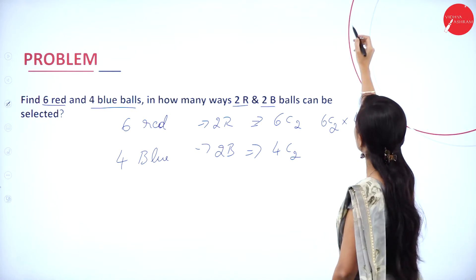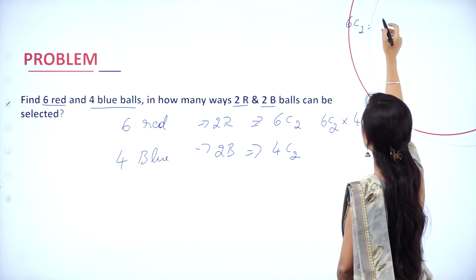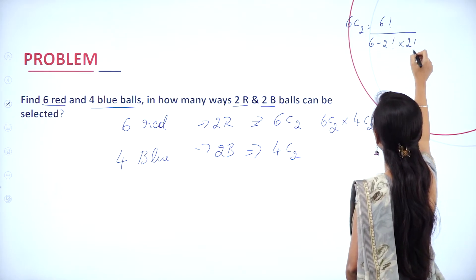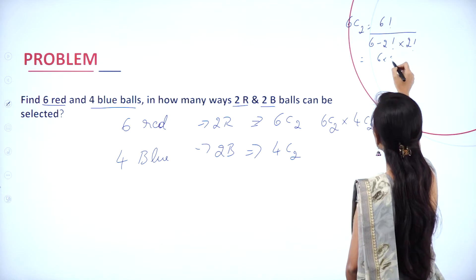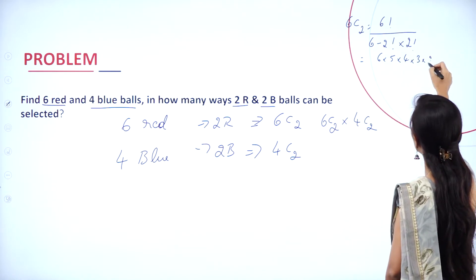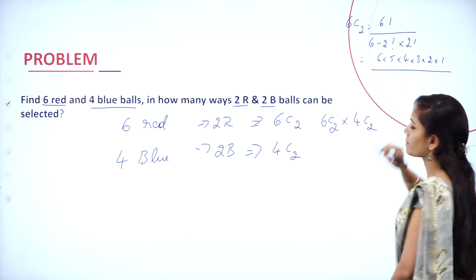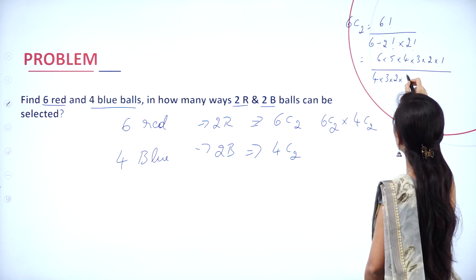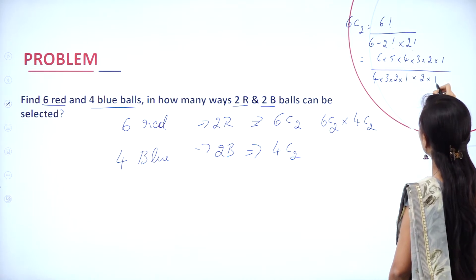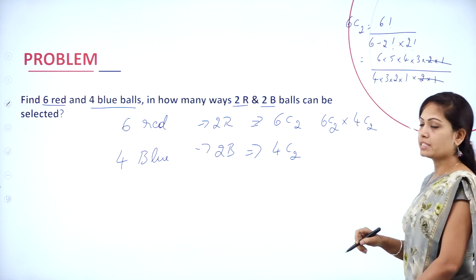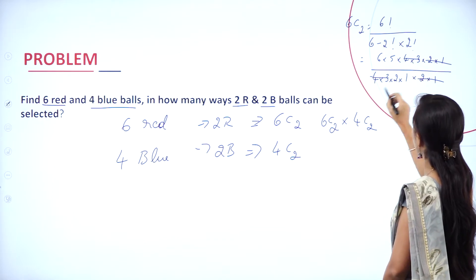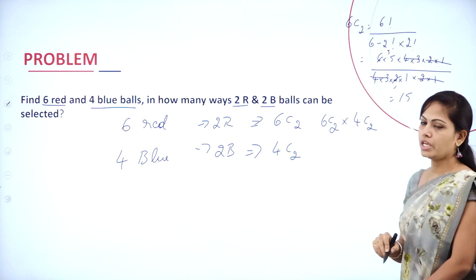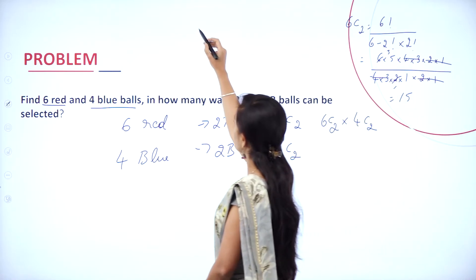Find the value of 6C2: that is 6 factorial divided by (6 minus 2) factorial into 2 factorial. That gives 6×5×4×3×2×1 divided by 4! into 2!. The 4! and 2! terms cancel, giving us 6×5 divided by 2, which equals 15.